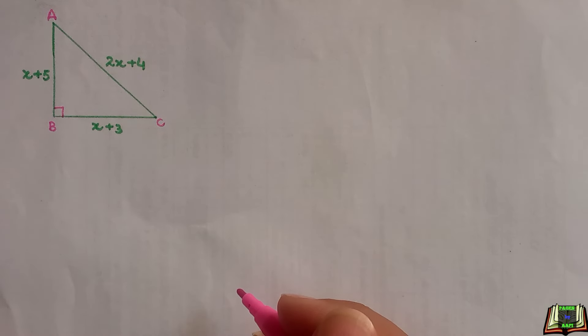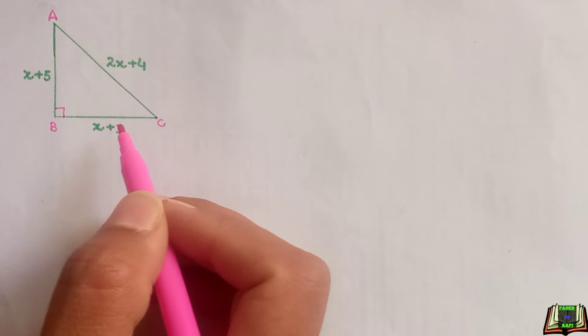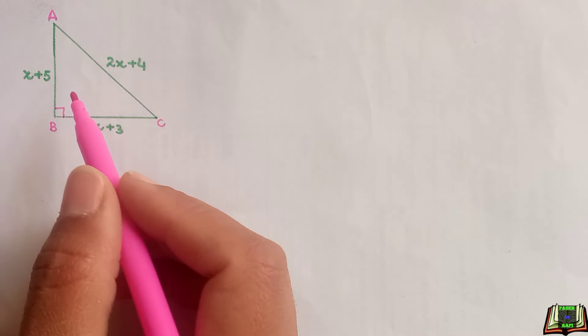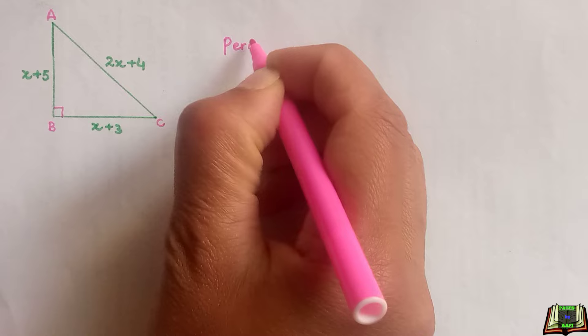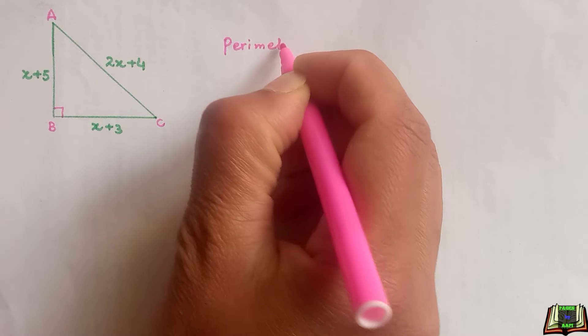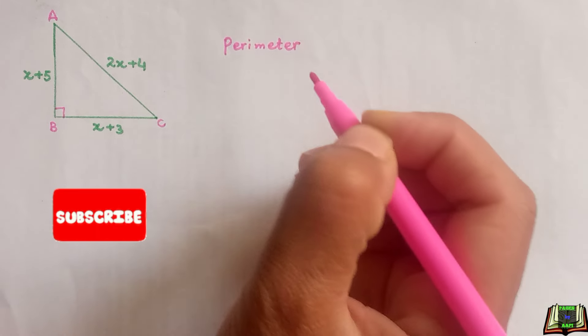Welcome back. In this video tutorial, we are going to deal with this trigonometry problem where a right angle triangle named ABC is given. We have to find out the perimeter of this right angle triangle. So all of you watch it carefully till the end and do like and subscribe.